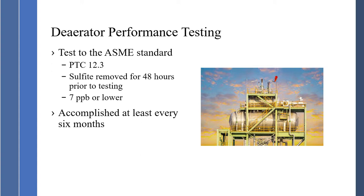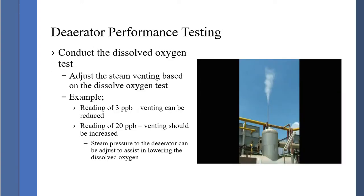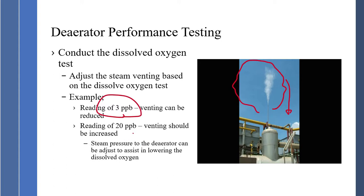That will tell you the deaerator performance. When conducting the dissolved oxygen test, we can adjust the steam venting based on the results. For example, at 3 parts per billion, I can reduce the amount of venting — I don't want to go over 5 parts per billion, and definitely not over 7 parts per billion, but I do not want unnecessary energy loss. If I get a reading of 20 parts per billion, venting should be increased, because that will help assist in getting rid of the non-condensable gases.